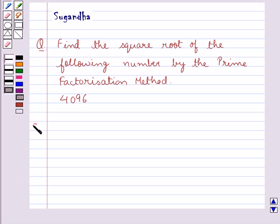Now let's move on to the solution. The number is 4096 and as you can see, the number is even. So we will start dividing this number by 2.